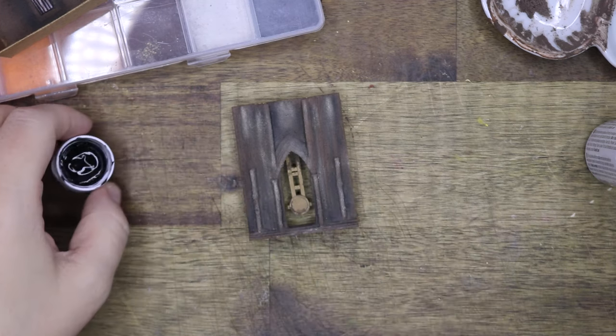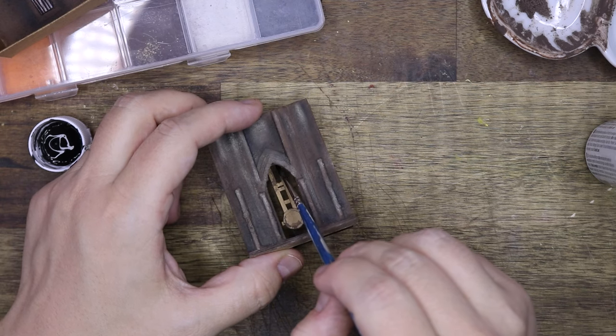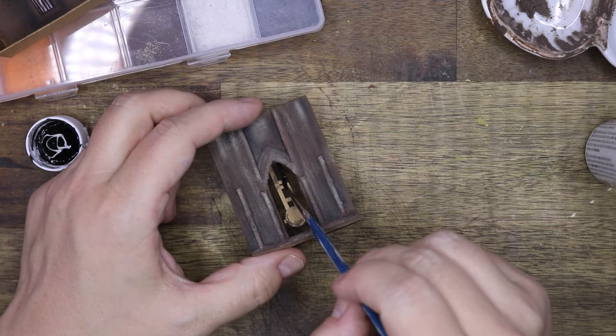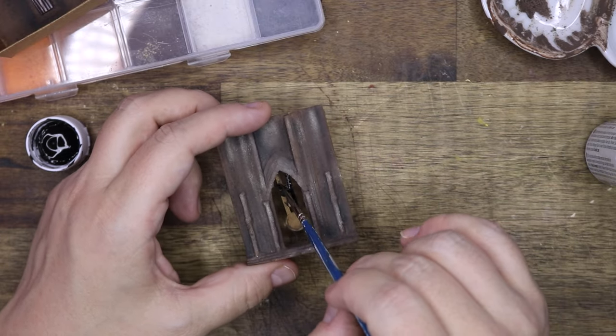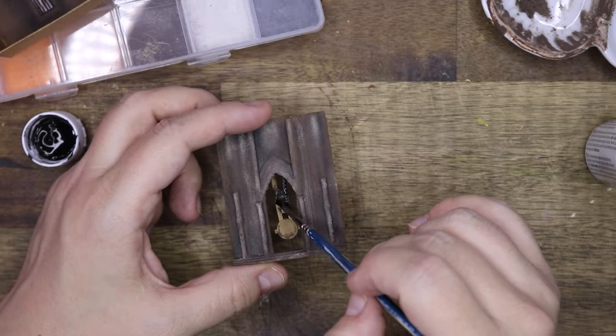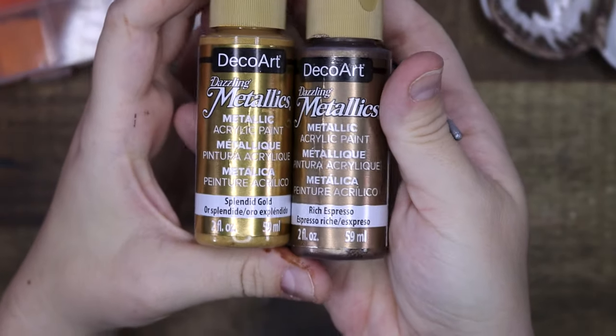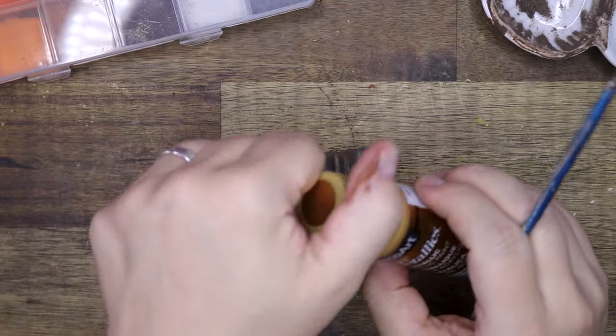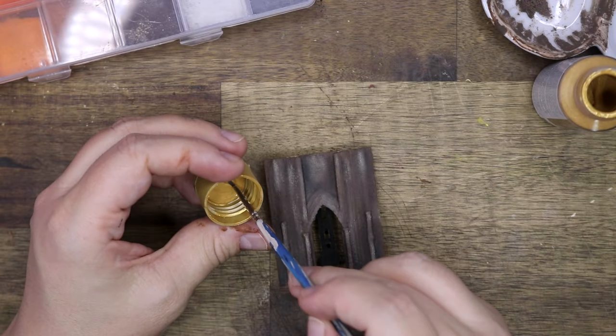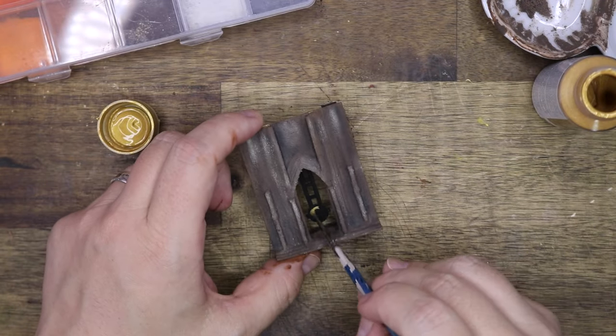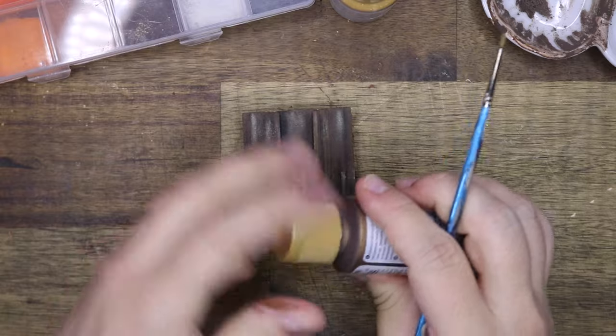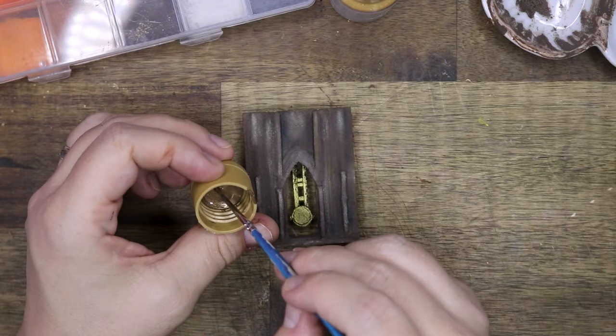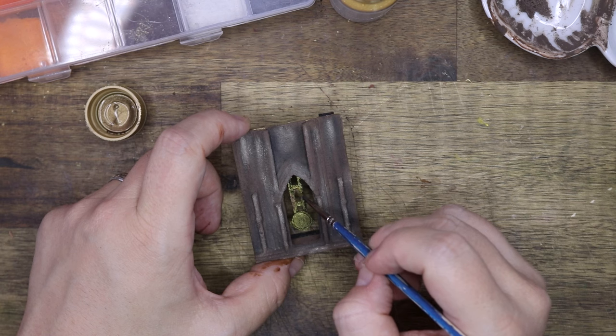Of course, we cannot forget about the pendulum. And I'm starting off with a black acrylic paint. And moving on after the black with some metallics. I have gold and bronze here. They call it differently in Deco Art, but golden bronze. And I'm going to apply that all over the pendulum. Then going in with the bronze for some aging and also with some black after to bring out the details again.